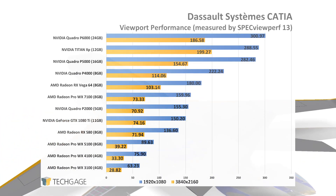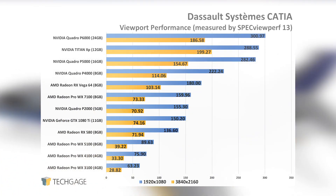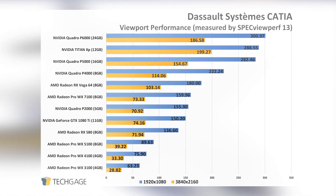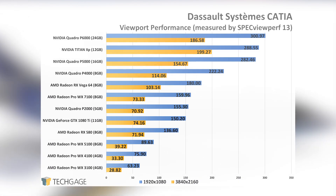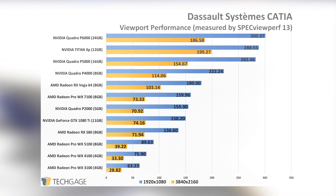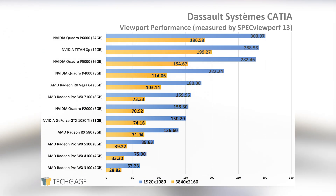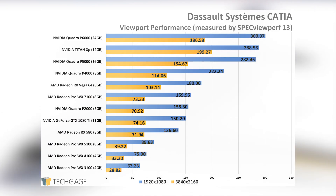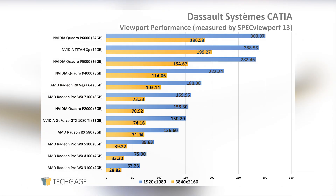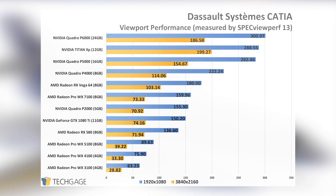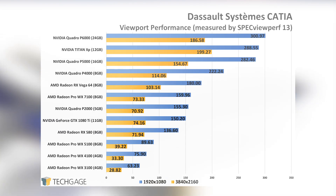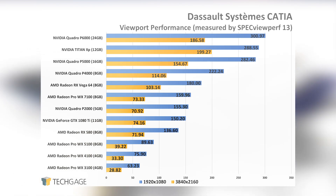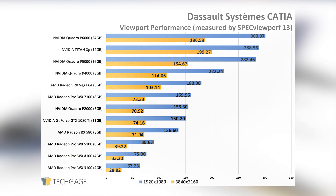While the Titan XP saw no real advantage in SolidWorks over a typical GeForce, CATIA shakes things up quite a bit, giving us our first real taste of the importance of understanding your workload. Here, the Titan XP doesn't just outperform the GTX 1080 Ti — it sits behind only the Quadro P6000. AMD also has some obvious optimizations in place for its Radeon Pro line, but the difference is not as stark as it is between GeForce and Quadro. That means that the faster the Radeon, the better, as we can see with the RX Vega 64 outperforming every other Radeon, even the product-certified WX7100.